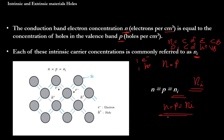Looking at this diagram — all silicon atoms — when a silicon atom is excited (its temperature is changed), it releases an electron from the conduction band, becoming a movable electron, and leaves behind one hole. So one hole and one electron: the number of electrons equals the number of holes in the case of an intrinsic semiconductor.